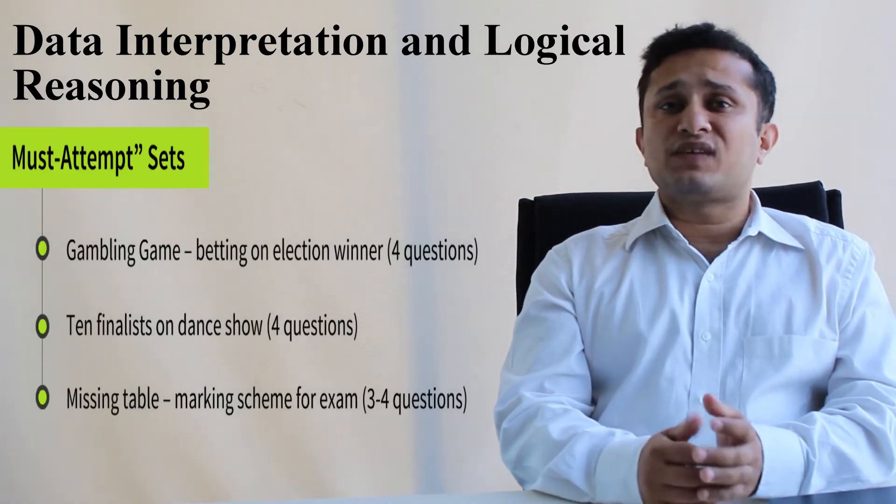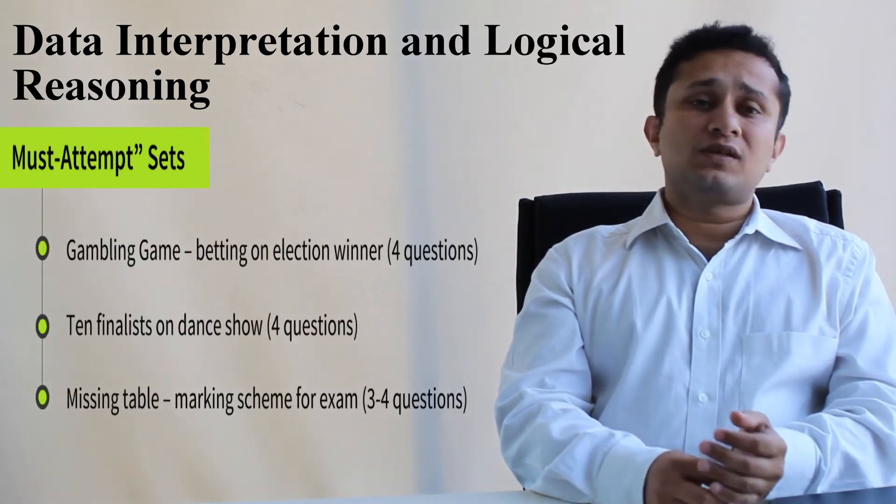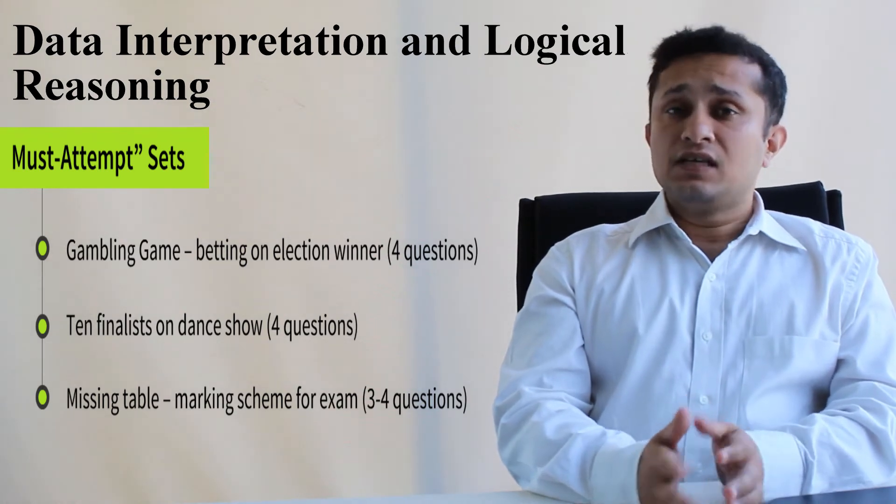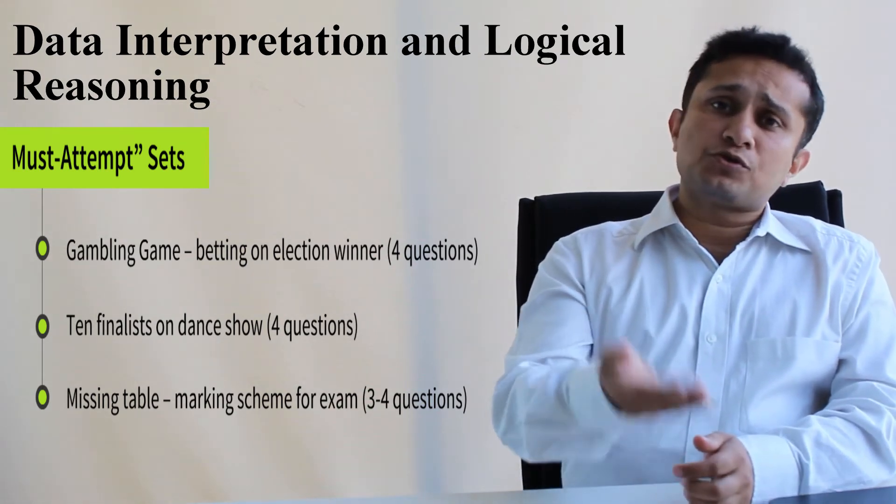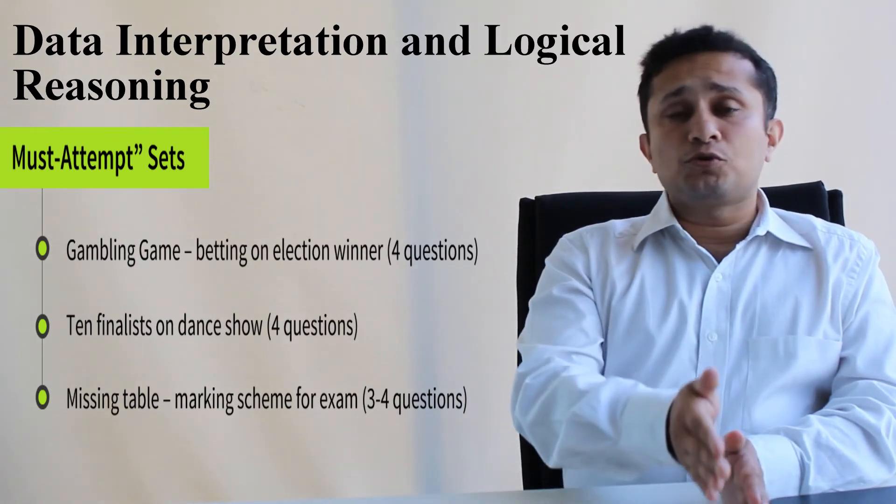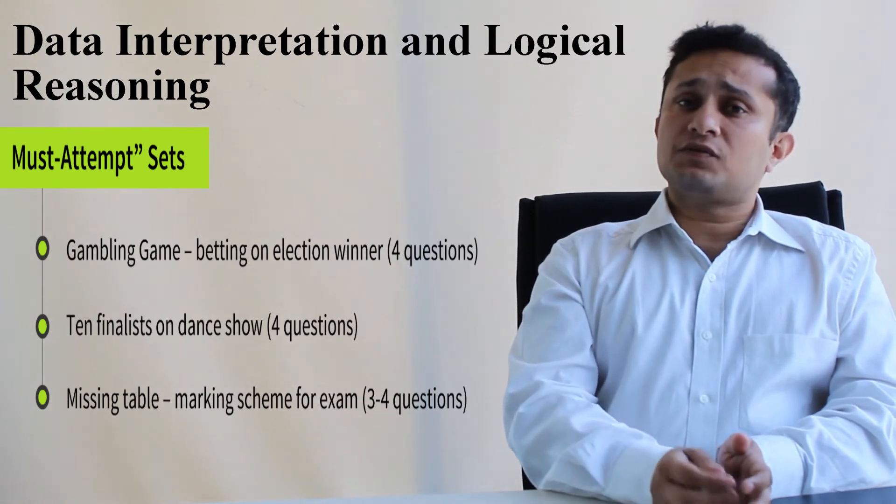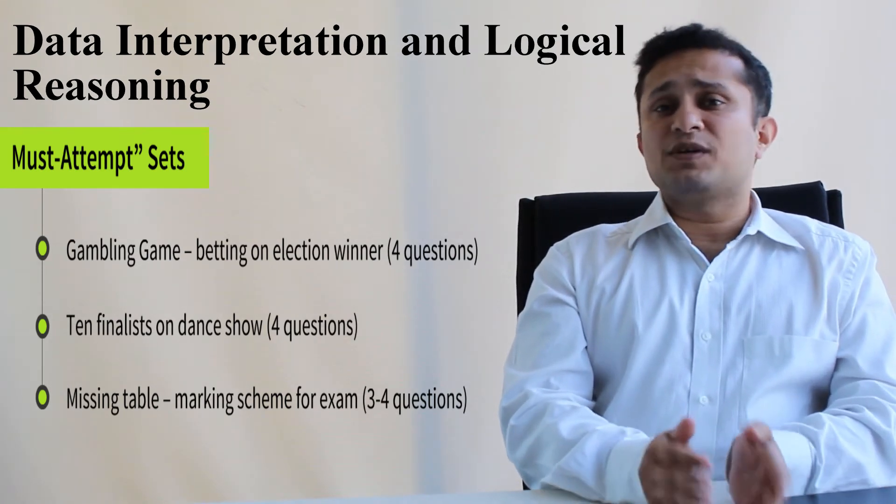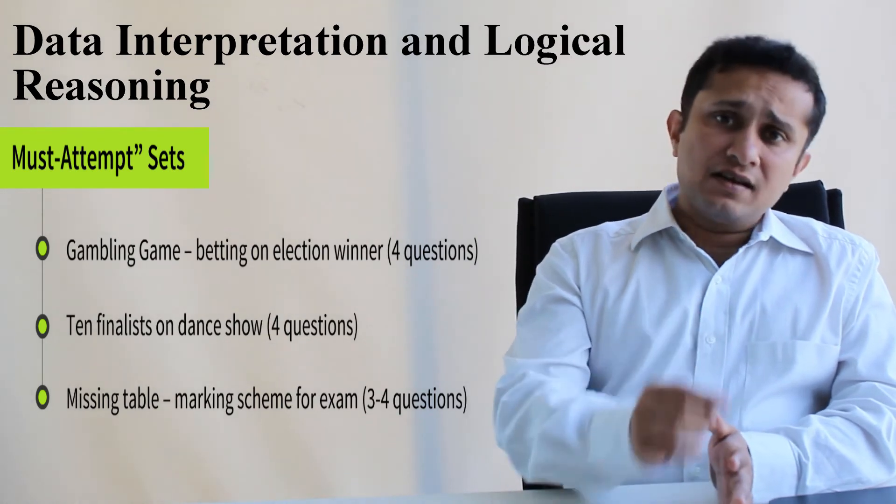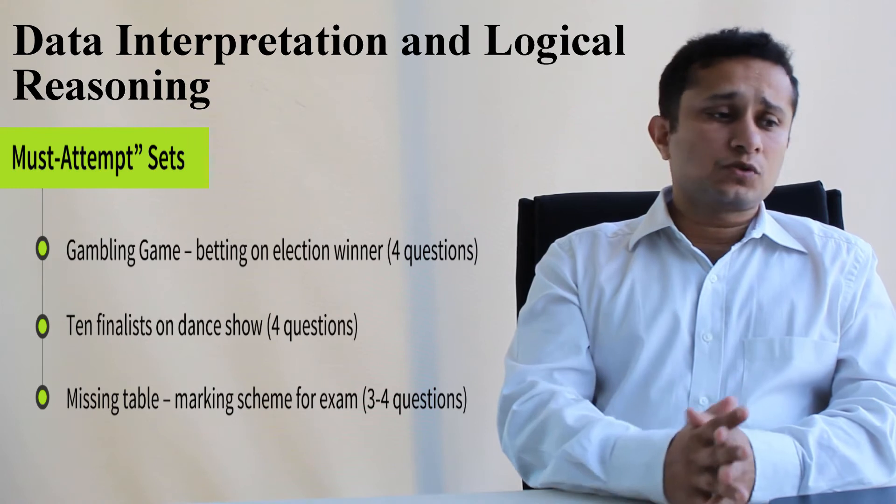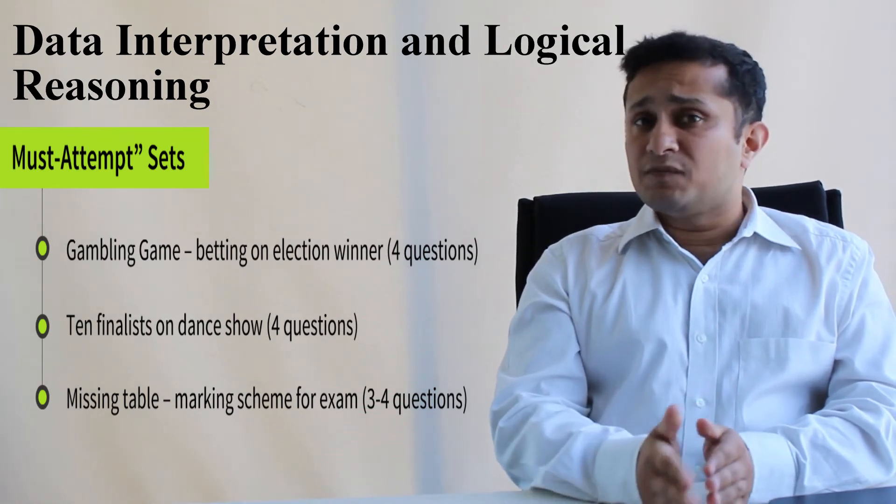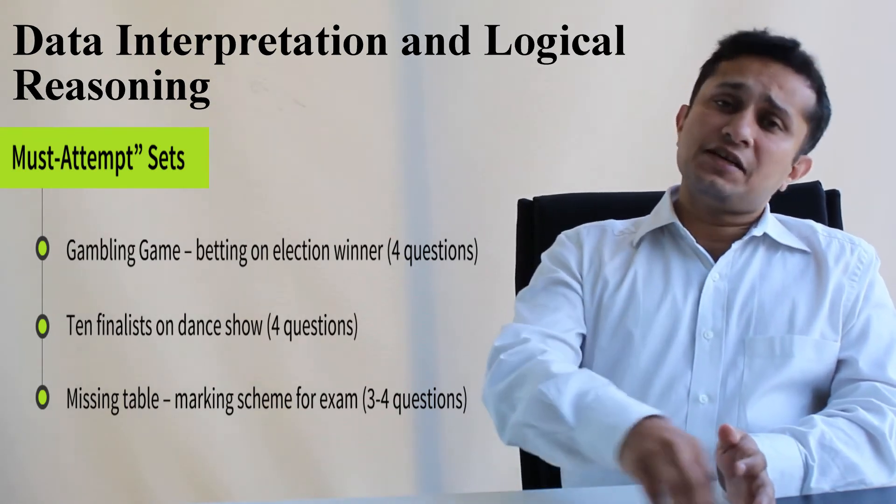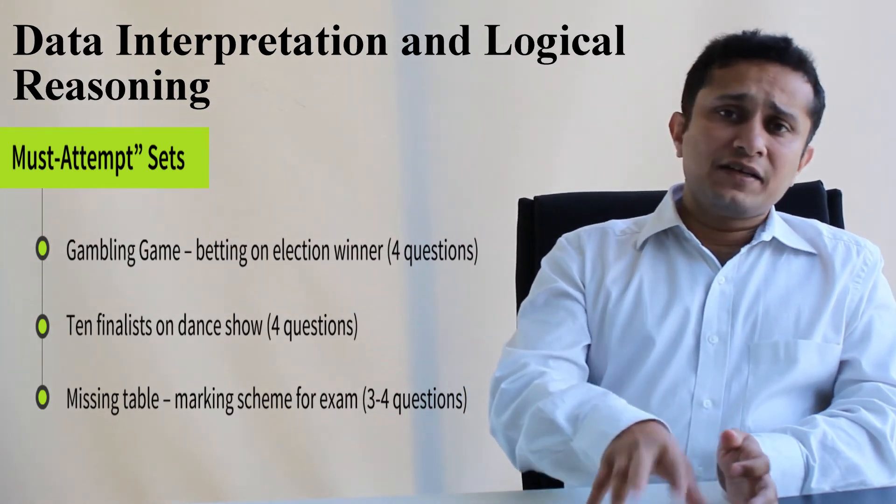So which were the top 3 sets that you should have tried? Firstly, there was one on gambling game based on betting on the winner of an election. This was a fairly easy set. Of course, you had different data for each question, so you had to solve it like 4 individual match questions, but this was something that you should have done. Then there was one table on 10 finalists in a dance show, slightly calculation based but becomes easy because you have the calculator in hand. So you could have used that and applied a lot of averages and solved this question. Then there was one on marking scheme for the exam, and that was a missing table. So this again could have been solved. But yes, these were the sets that you should have definitely tried in the exam and got around 11 to 12 attempts here.